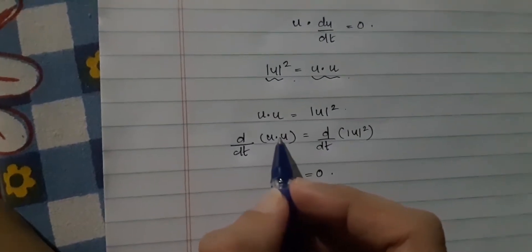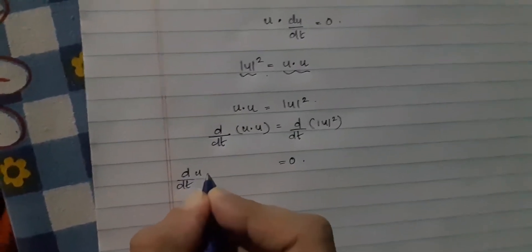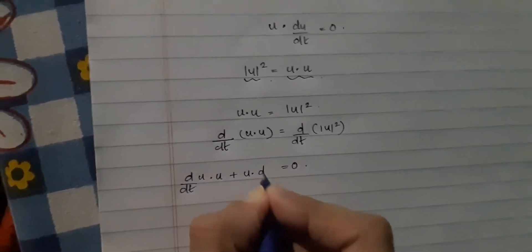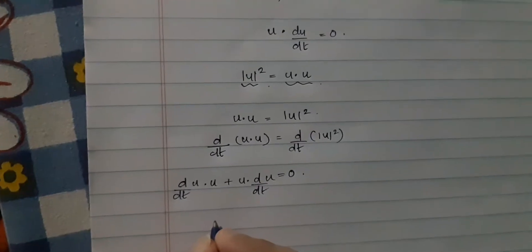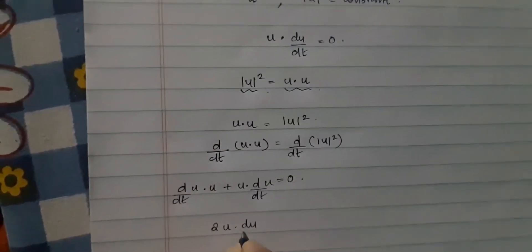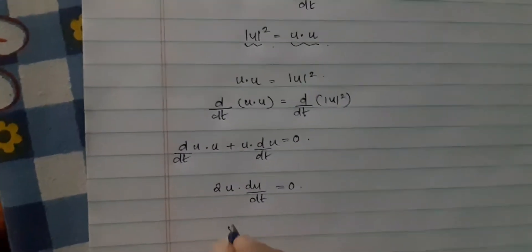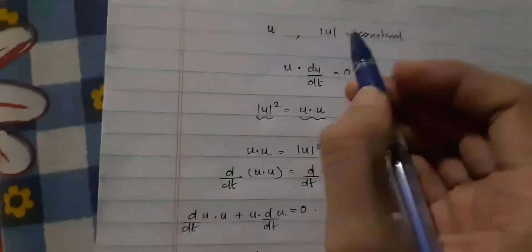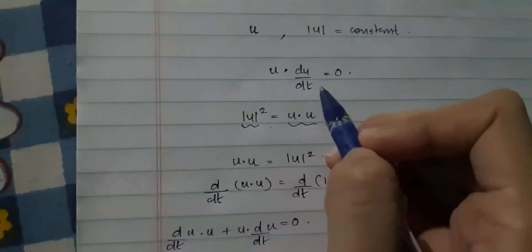We will apply the dot product rule since it is the dot product of two vector-valued functions. The dot product rule gives d/dt of u dot u plus u dot d/dt of u. Since dot product is commutative, we can add this, giving 2u dot du/dt equal to 0. Now 2 can never be 0, so u dot du/dt will be 0. So any vector-valued function with constant magnitude is orthogonal to its derivative.